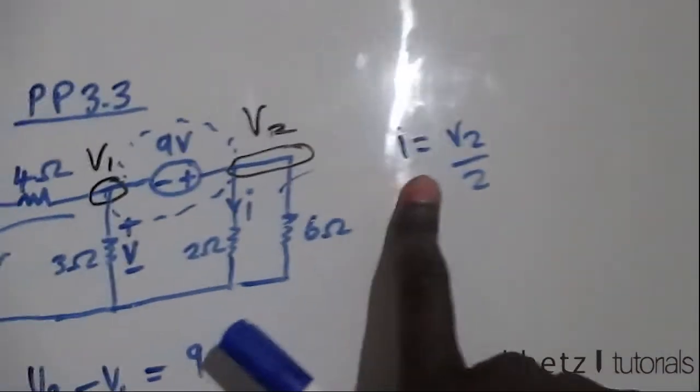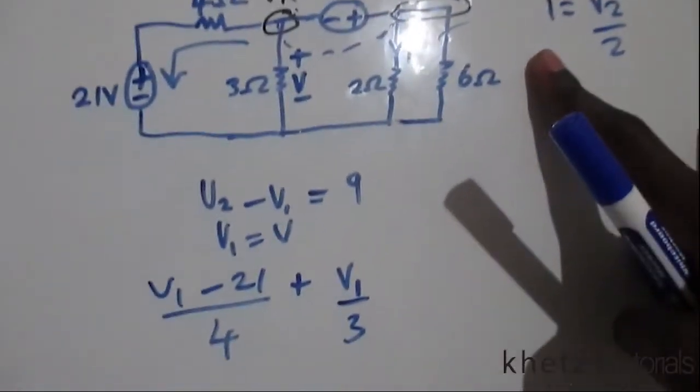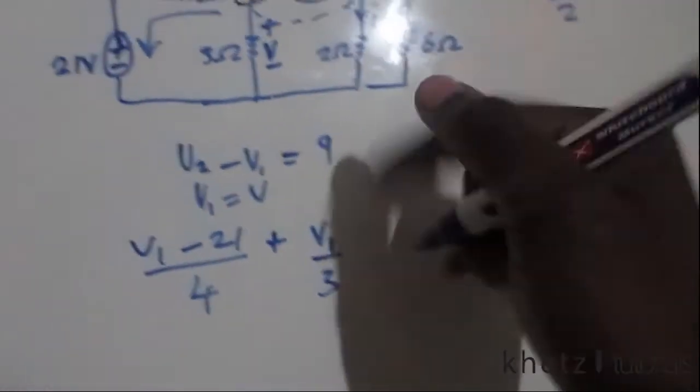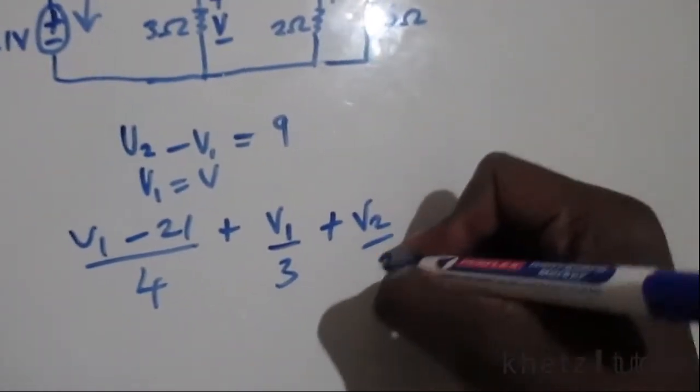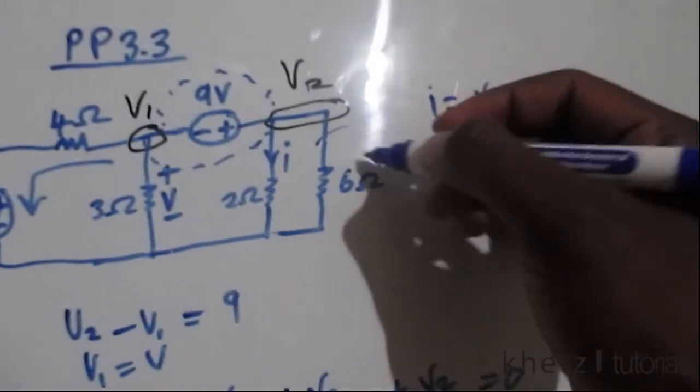This v2 is going to help us find i. Finally, we have plus v2 divided by 2, and finally we have v2 divided by 6 equals zero, which is the current going here.